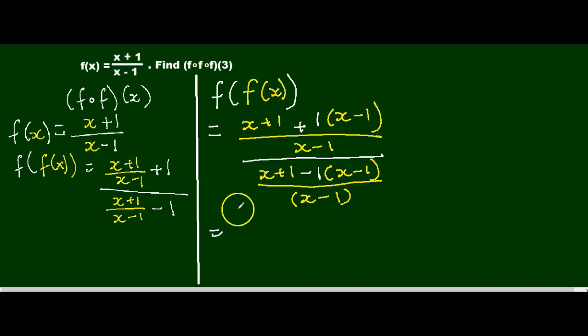Now I'm working my numerator again. So I get x plus 1 plus, using my distributive property, I get 1 times x, which is x, and 1 times negative 1, which is negative 1, over x minus 1.